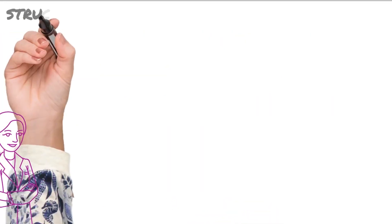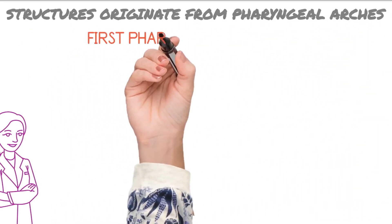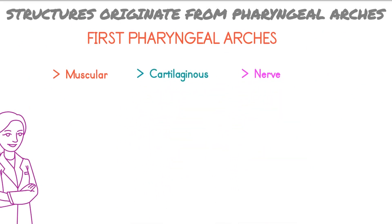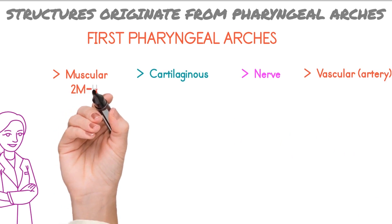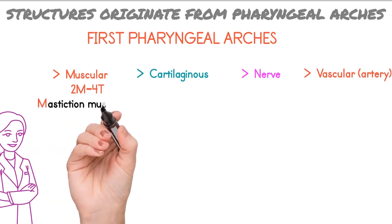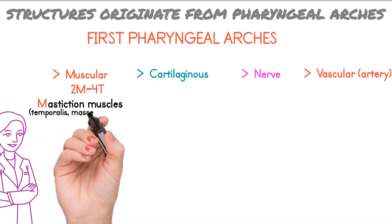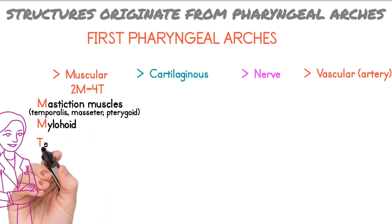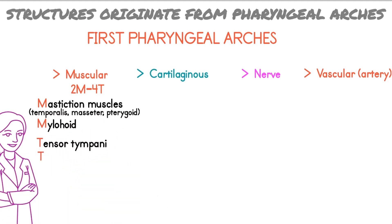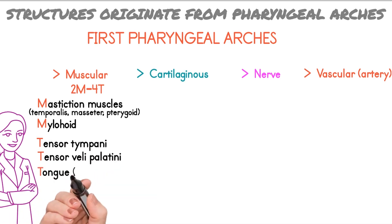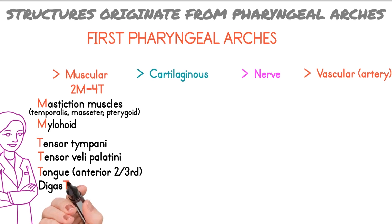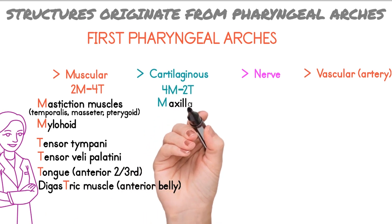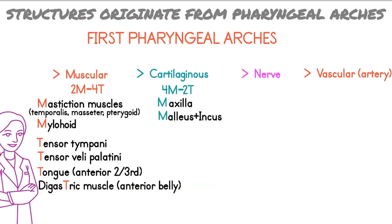Now, which structures are formed from the first pharyngeal arch? The first pharyngeal arch forms muscular, cartilaginous, nerve, and vascular components. The muscular component has the mnemonic '2M4T.' From M, there are muscles of mastication, which include temporalis, masseter, and pterygoid. Also myelohyoid muscle. From T, there are tensor tympani, tensor veli palatini, anterior two-thirds of tongue, and the anterior belly of digastric muscle.